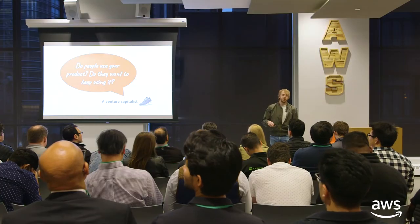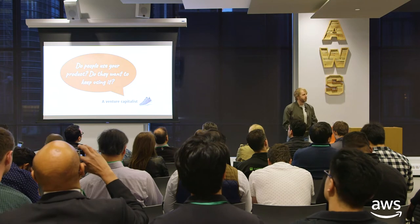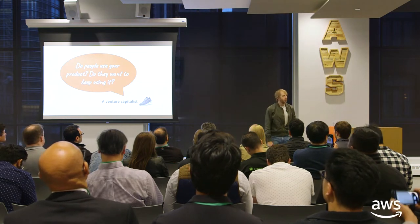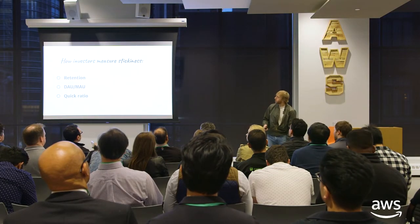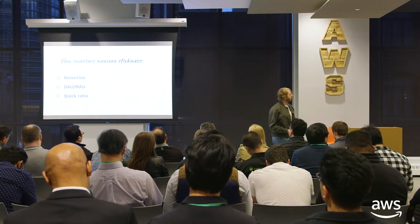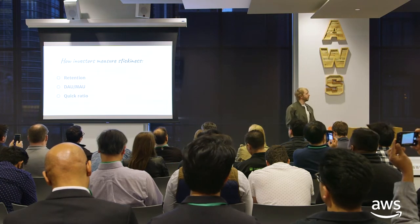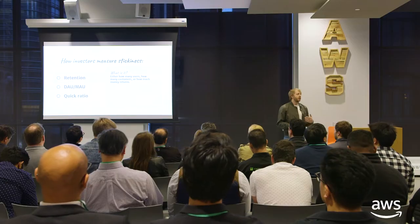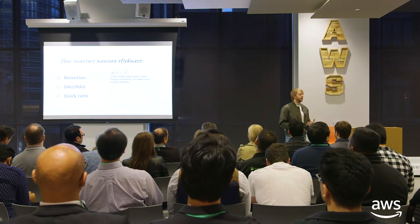Next: product stickiness. Once you have those growth metrics telling a good story about people coming in and wanting to use the product, the next question is: is the product sticky? When investors ask this, they really want to know — do people truly use your product? Are they digging into it? Do they want to keep using it? There are three metrics investors use to measure stickiness: retention, DAU over MAU, and quick ratio. Retention is pretty simple — how many people come back after they use it? There are a few different types though: user retention, customer retention, and revenue retention.